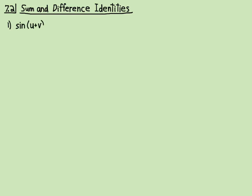The first one is sine of u plus v equals sine u cosine v plus cosine u sine v. To memorize this, you want to recognize patterns. Notice on the left it's u then v, and on the right it's u then v, and u then v — so it goes uv, uv, uv, uv.